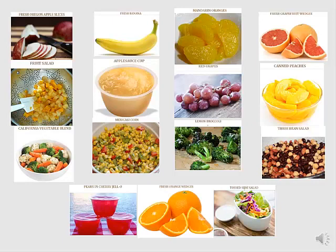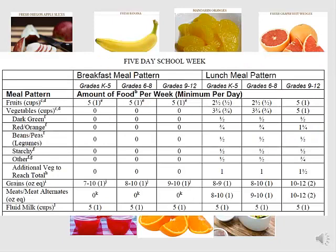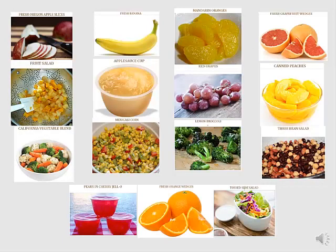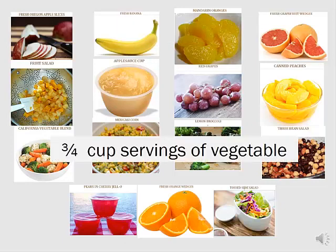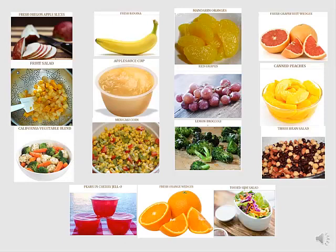Keep in mind there are several requirements surrounding these components, in particular our vegetables. Not only do we want to consider our daily and weekly minimums, but we need to ensure that we've included each of the vegetable subgroups in their minimum quantities. For our proposed menu, we plan to offer a half a cup serving of our fruit choices and a three-quarter cup serving of our vegetable choice. We need to remember on Friday that we need to offer one and a half cups of the salad option to credit as that three-fourth cup vegetable serving.